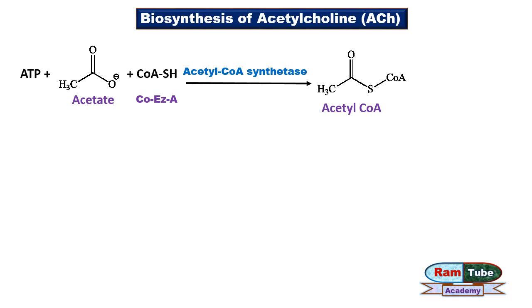At high glucose levels, acetyl-CoA is produced after glycolysis, in which the final product of glycolysis — pyruvate — undergoes oxidative decarboxylation to form acetyl-CoA. At low glucose levels, acetyl-CoA is synthesized by the process of beta oxidation of fatty acids.